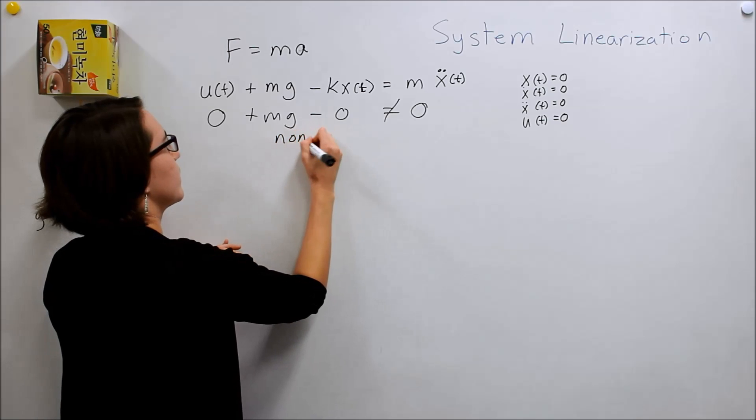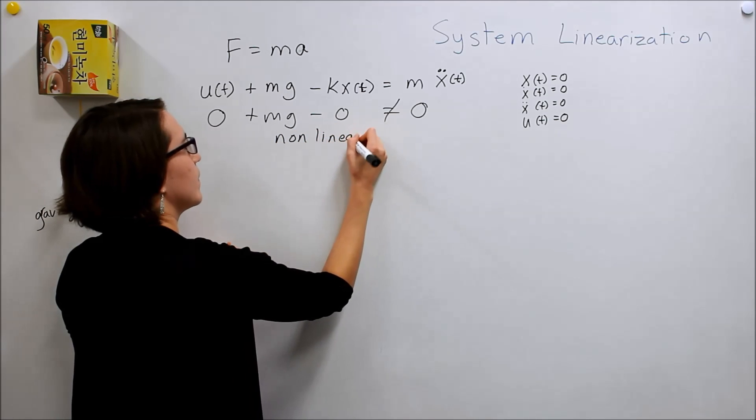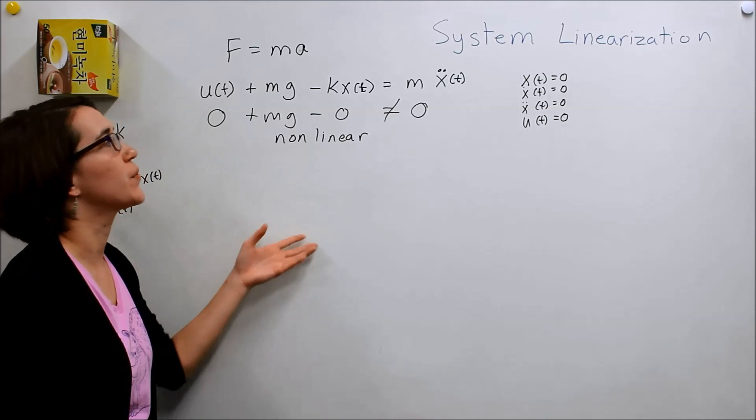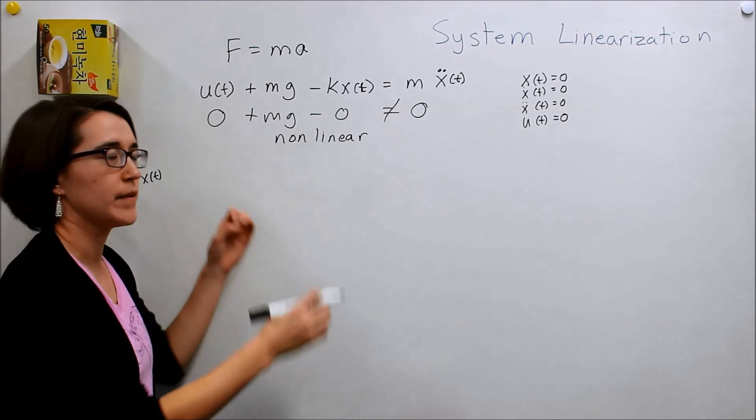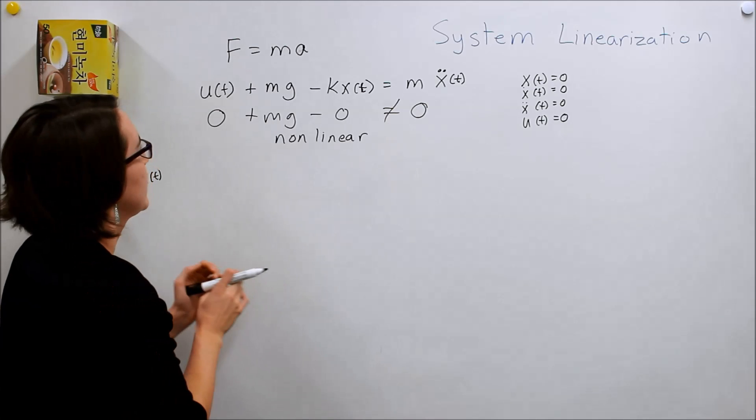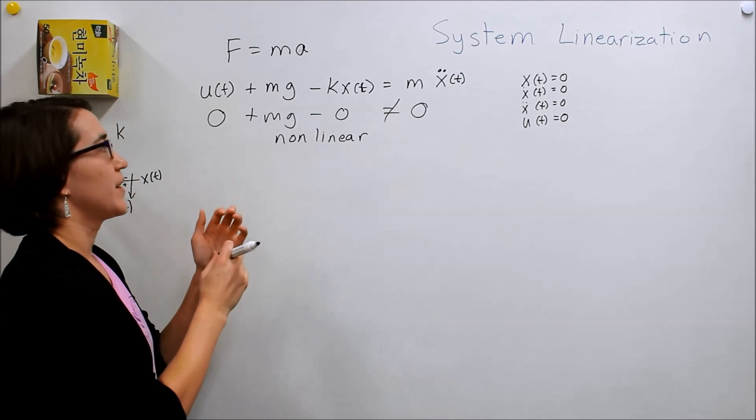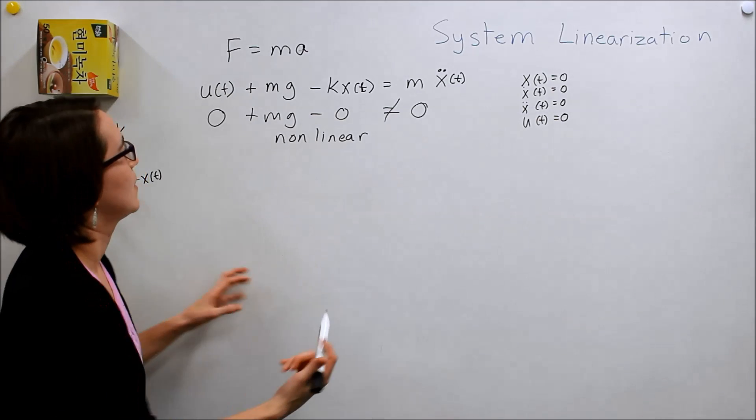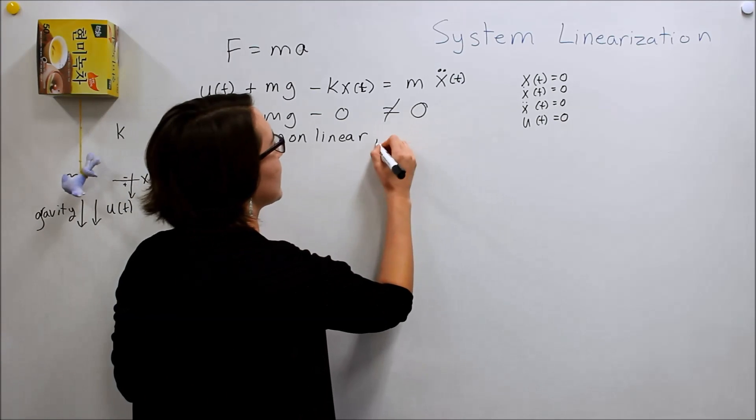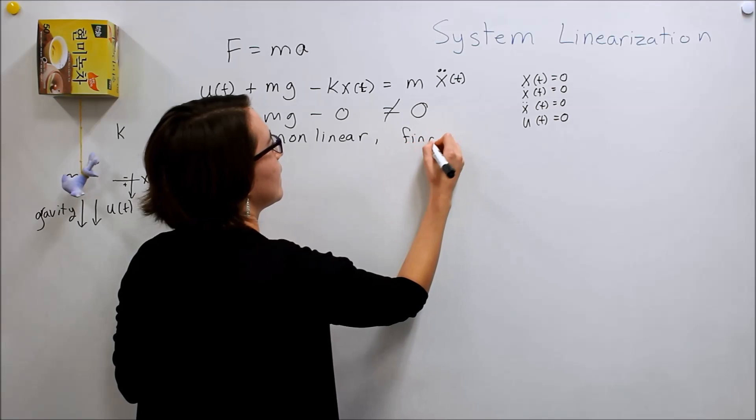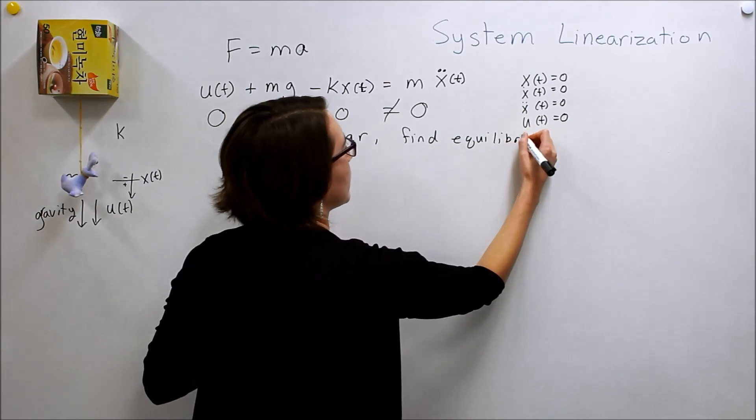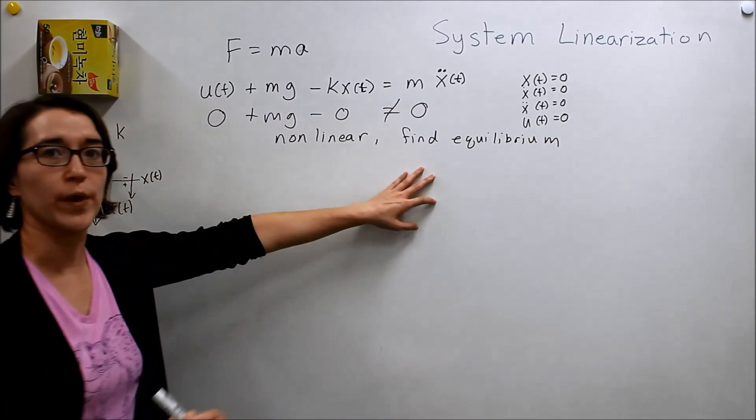So, this is not a linear system. This is a non-linear system. Which means that we have to linearize it in order to work with it in terms of transfer functions. And in order to linearize it first, we need to figure out where the equilibrium point is. So, we want to find the equilibrium point.